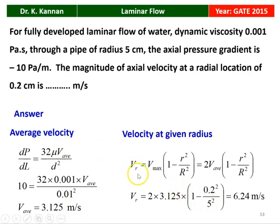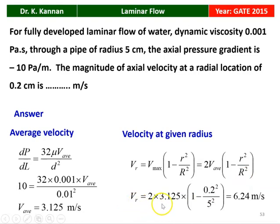The velocity at a given radius is V(r) equal to V-max × (1 minus r² / R²), where r is the given radius and R is the outer radius of the pipe. Since V-max equals 2 × V-average, substituting: 2 × 3.125 × (1 minus 0.2² / 5²) equals 6.24 meters per second. So the velocity at the given radial location is 6.24 meters per second.